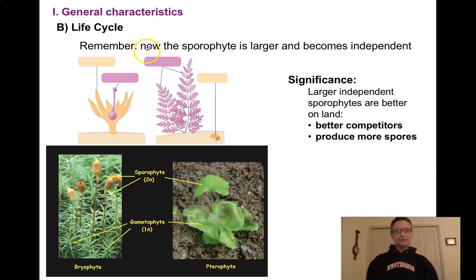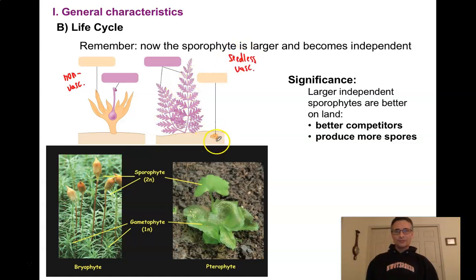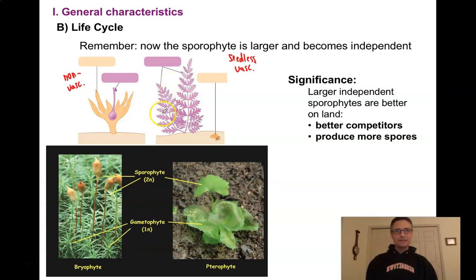In our non-vascular plants, the gametophyte generation was dominant and the sporophyte depended on it. Now in our vascular seedless plants, the gametophyte is very small, the sporophyte is much larger and eventually independent. We can see that transition happen: here is the little gametophyte, a little sporophyte starting to grow out of it. As the sporophyte becomes much larger, it will eventually become independent and start to look like a fern.